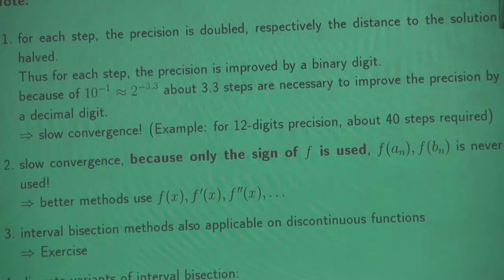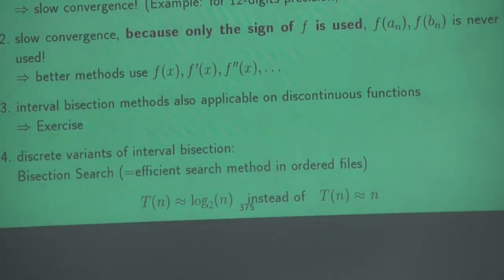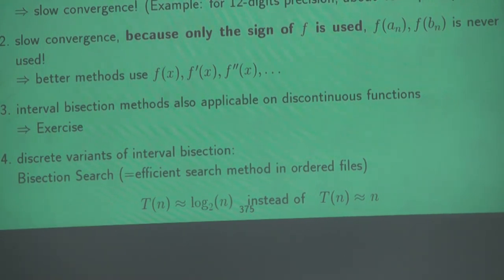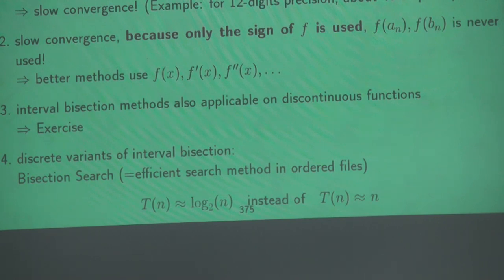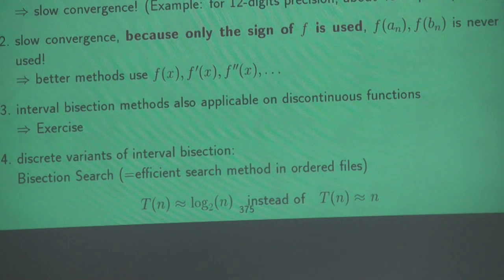For the computer science students, it may be interesting to see the relation between the interval bisection method and bisection search. Bisection search is a search algorithm you can apply on files to find elements. Maybe you have a text file and search for a word, but only under some assumption — the file must be sorted. Files in computer science are never continuous because we live in a discrete world, where the notion of continuity doesn't make sense.